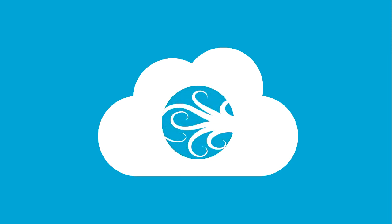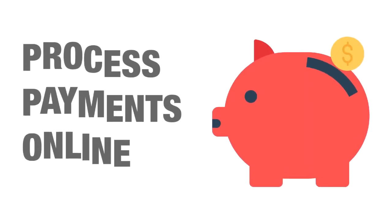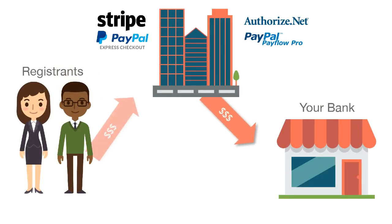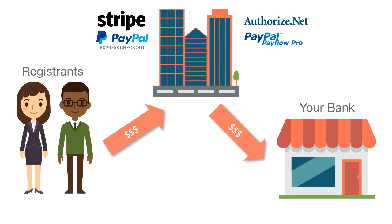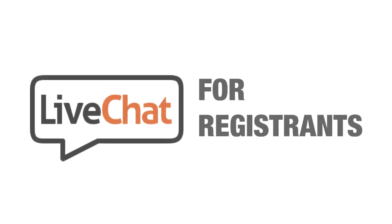EventSquid is cloud-based and licensed on a flat fee basis. You pay an annual license fee and get all the features we offer, all the time. If you need to process payments, you can choose from popular gateways like Stripe, PayPal Express, Authorize.net, and PayFlow Pro, linking those gateways directly to your bank account. Money goes right from the registrant into your gateway — we do not charge anything for that service and we don't participate in the transaction. You get an unlimited number of administrative user seats, can set up as many events as you want, and your registrants get live chat in case they run into technical hurdles.